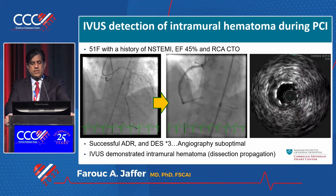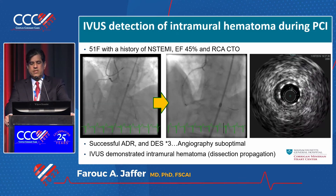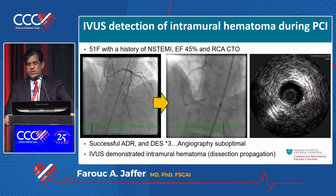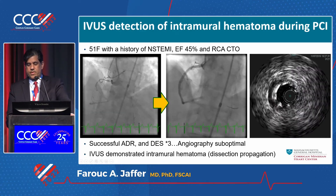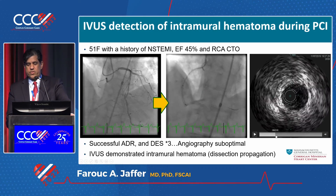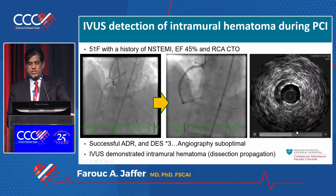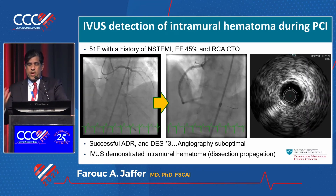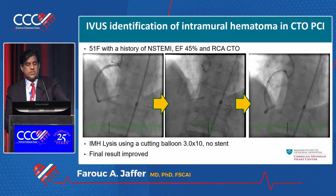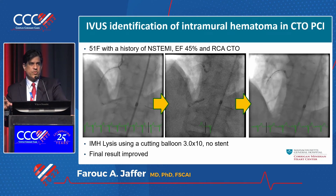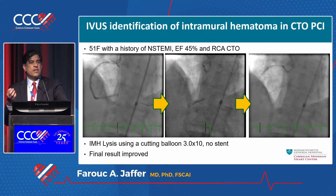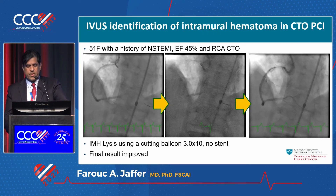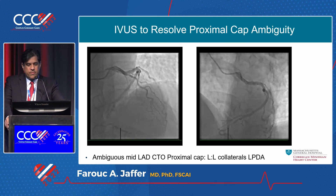Here is a more complicated case — a total occlusion with successful antegrade dissection re-entry. In the middle panel you see the final outflow, but there appears to be an edge dissection with no reflow. Imaging clarified this: on manual IVUS pullback, at the very edge of the stent distally, there is a large crescent at 3 to 9 o'clock — a significant intramural hematoma. Rather than placing another stent, which could propagate the hematoma, we used a cutting balloon to lyse the hematoma — angioplasty only, no stent — with improved outflow.